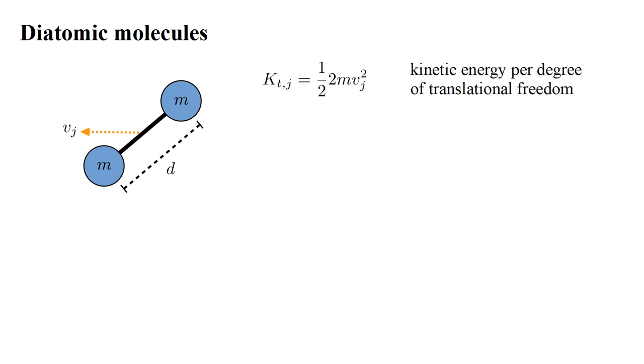This contributes one-half two m v-j squared to the total energy. In addition, a molecule can rotate about its center of mass with angular velocity omega-j, where j equals one, two, or three,